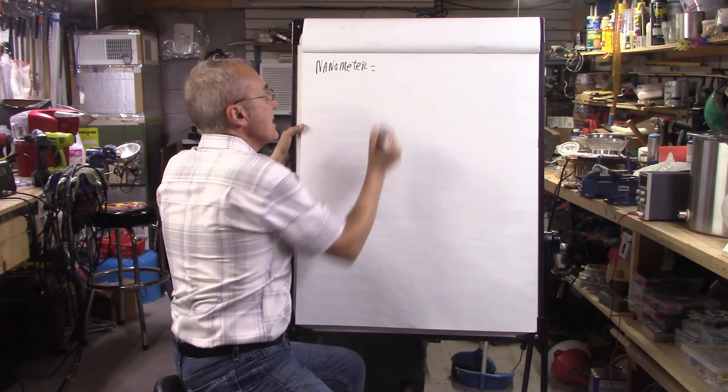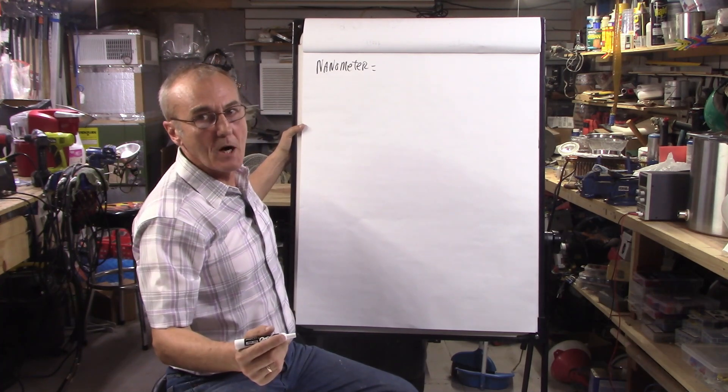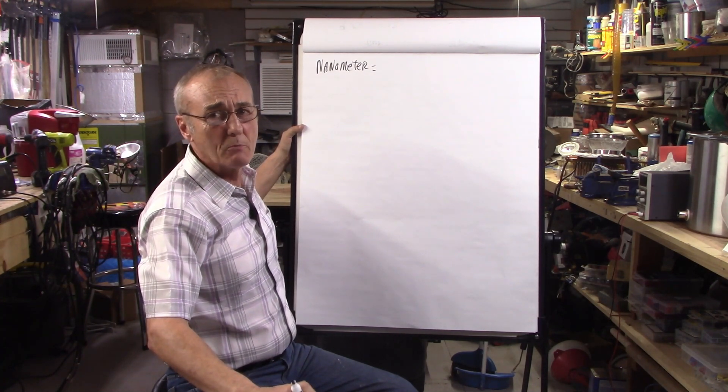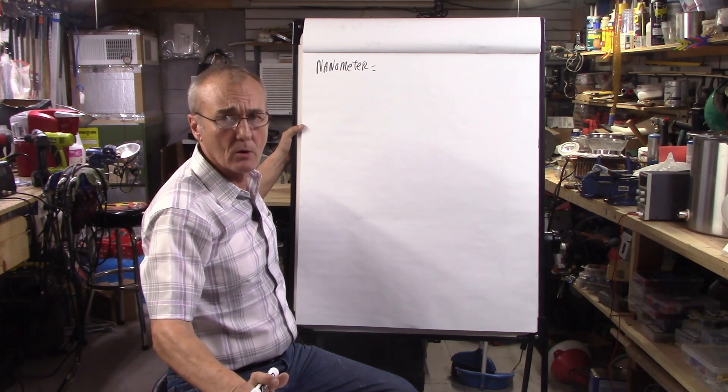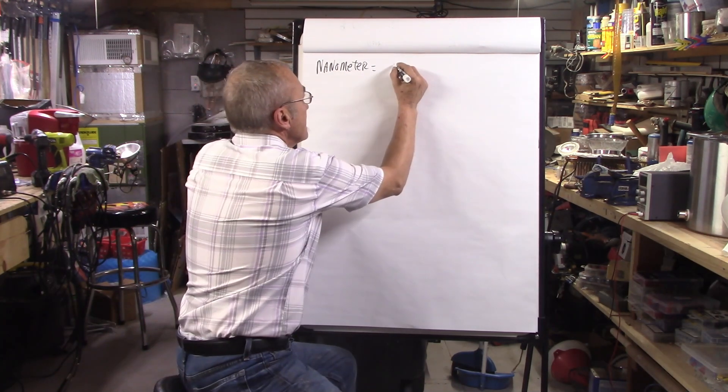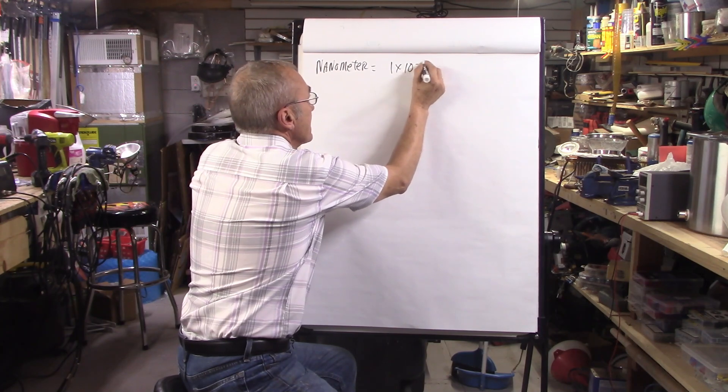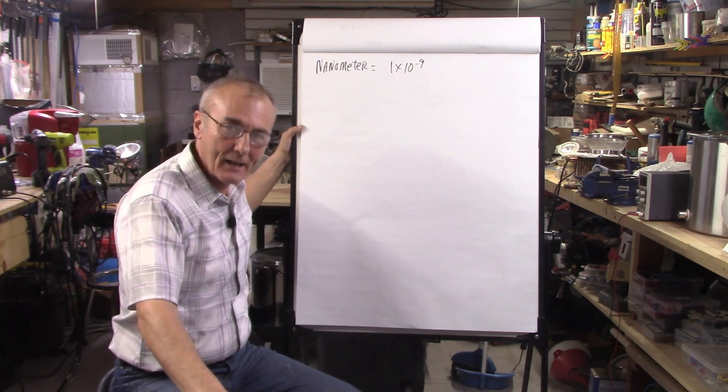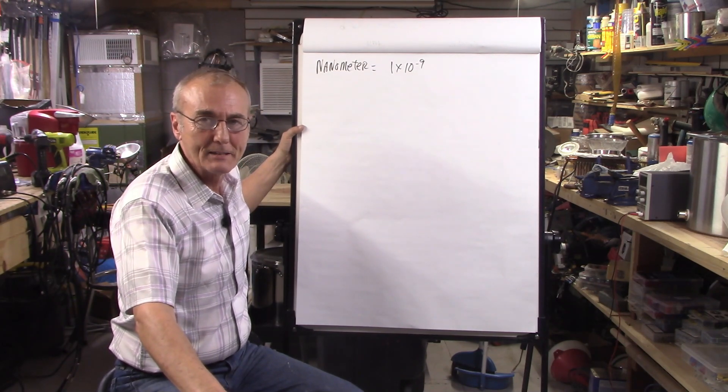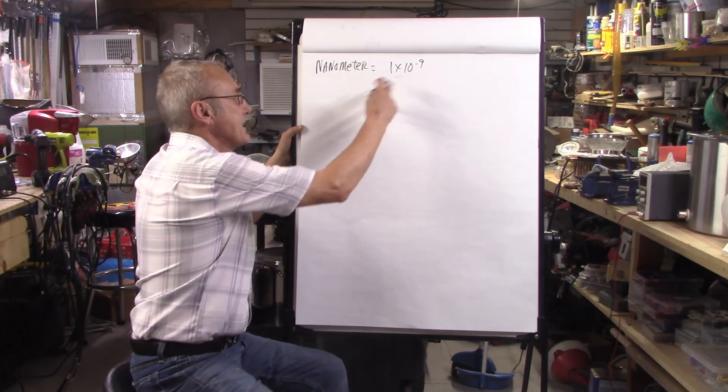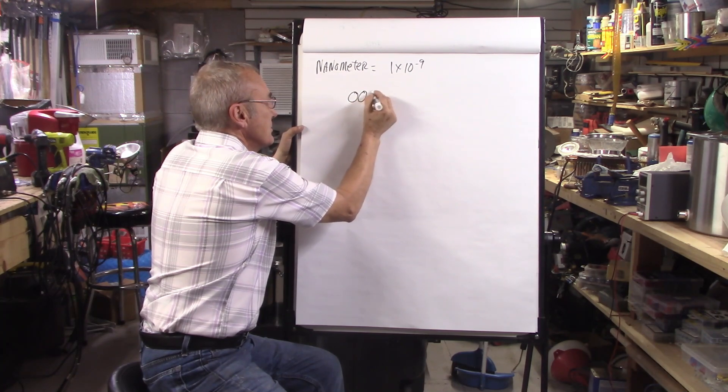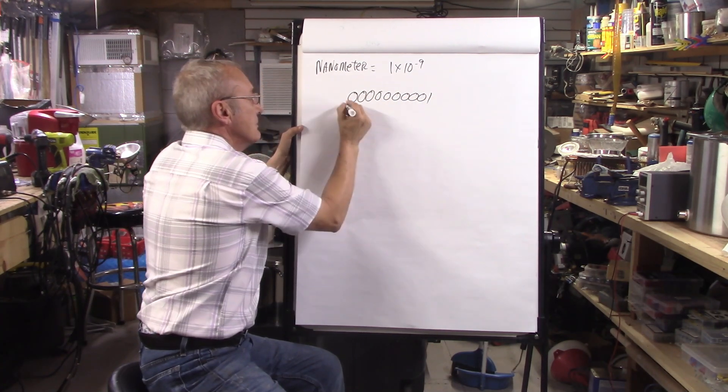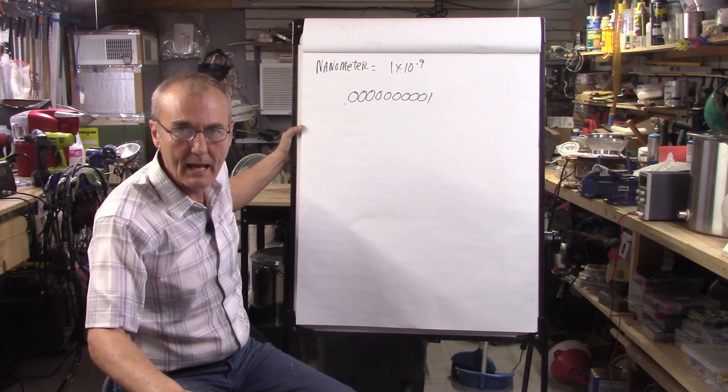A nanometer equals a billionth of a meter. A billionth, that's really, really tiny. Now we're talking about a molecular level. That's one times 10 to the negative nine. Can you imagine being that guy in a lab who's got to sit and write all this out? He would write 0.000000001. That's how tiny it is.